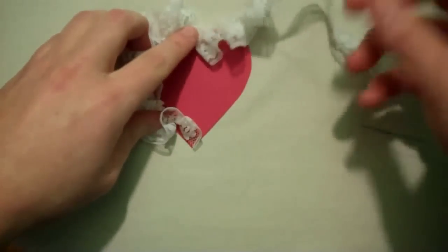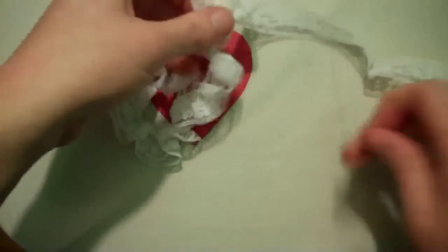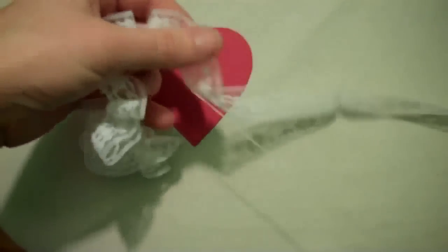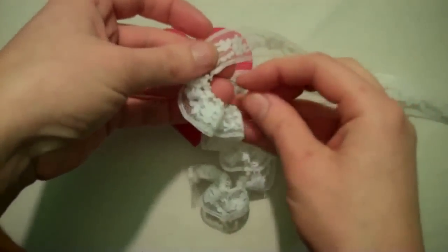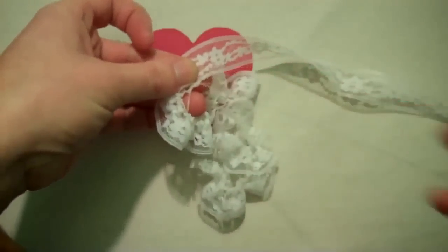Measure your scrunched seam binding to be sure it fits all the way around the heart. When you have enough, tie off the thread and cut off the excess seam binding and the excess thread.